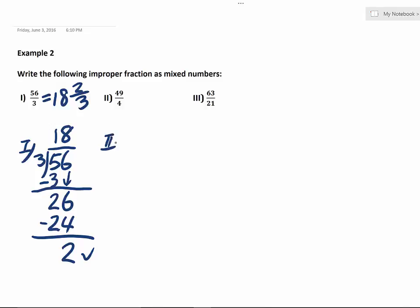Second question, it's 49 divided by 4. So 4 going into 4, 1 times 4, 1 times 4 is 4. Now bring down 9.